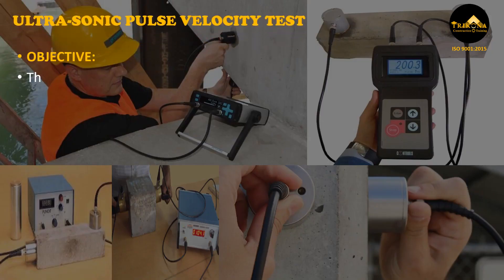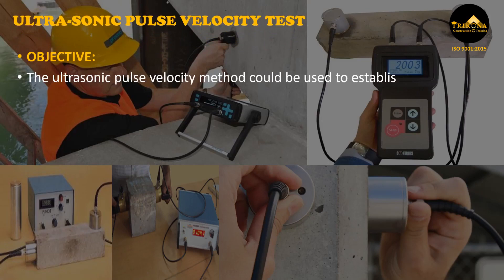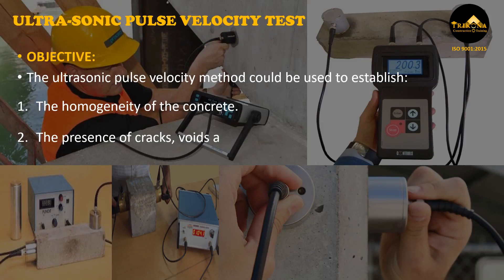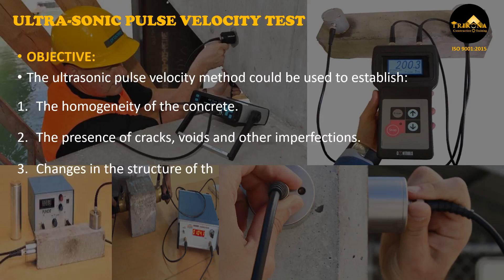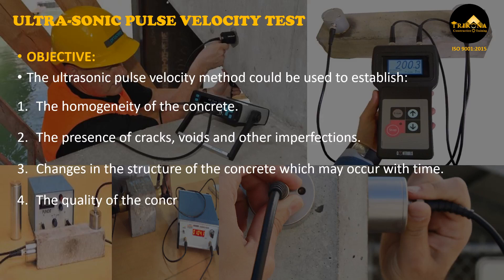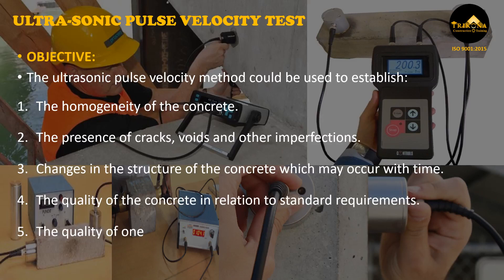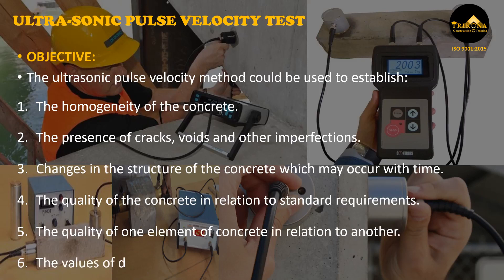Objective. The ultrasonic pulse velocity method could be used to establish the homogeneity of the concrete, the presence of cracks, voids, and other imperfections, changes in the structure of the concrete which may occur with time, the quality of the concrete in relation to standard requirements, the quality of one element of concrete in relation to another, and the values of dynamic elastic modulus of the concrete.